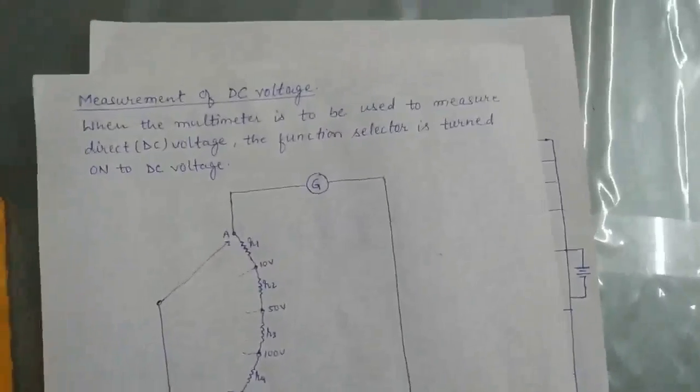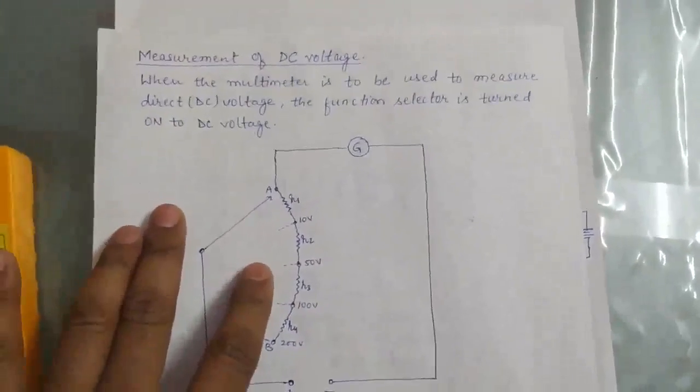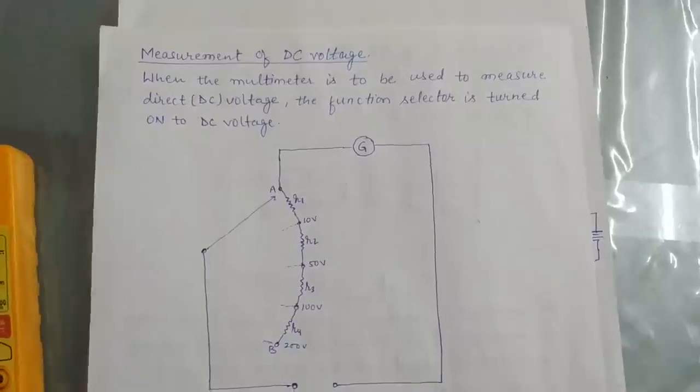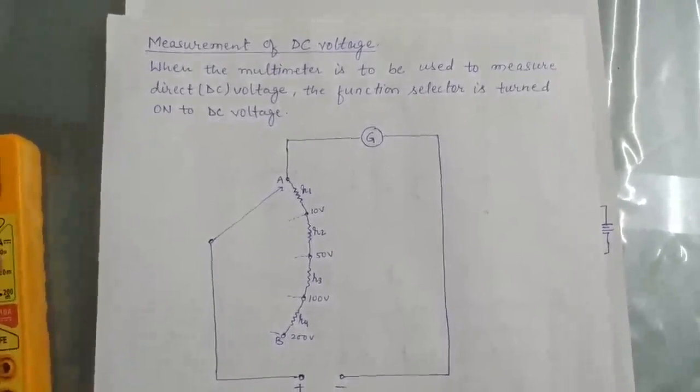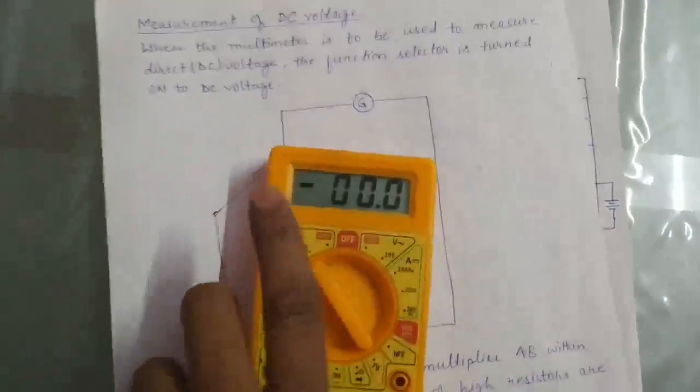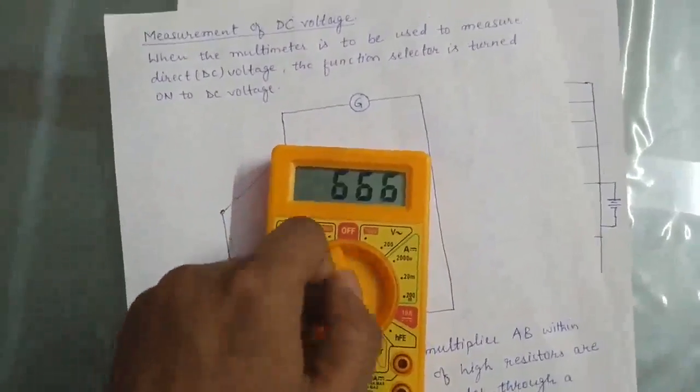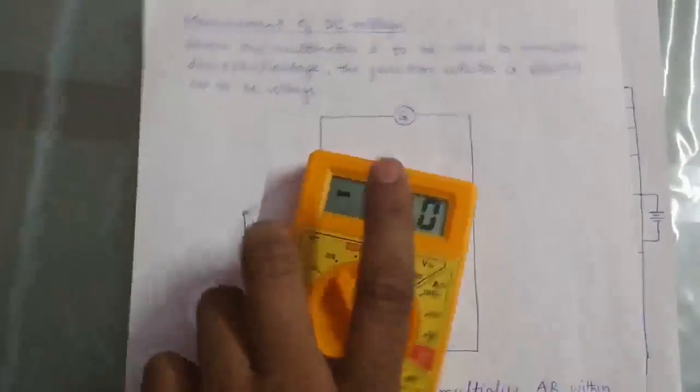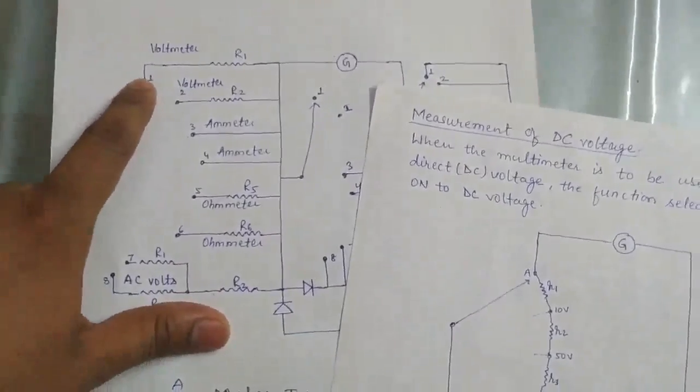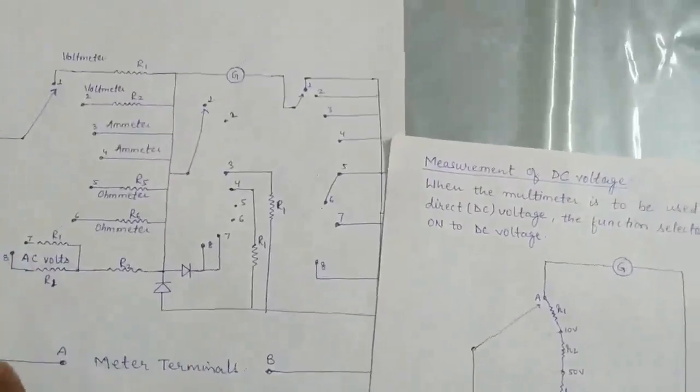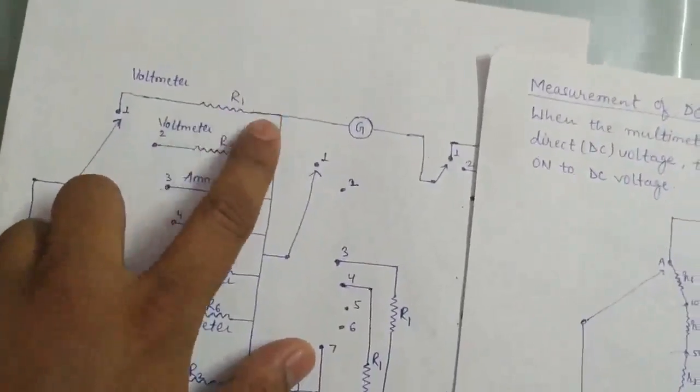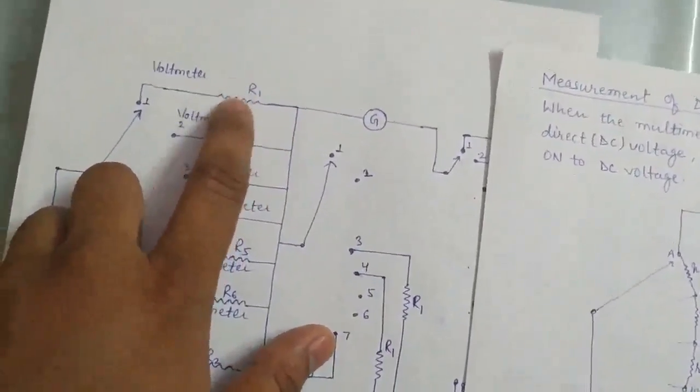For measurement of DC voltage, when the multimeter is used to measure direct voltage, the function selector is turned on to DC voltage. Here we see, turn on to DC. Now this part is connected, then this loop is formed. This resistance is total R, divided into small resistances R1, R2, R3, and R4 to select a range.